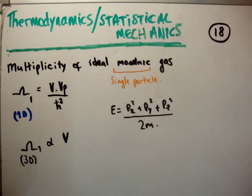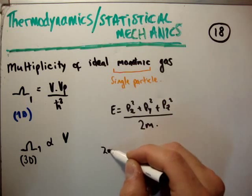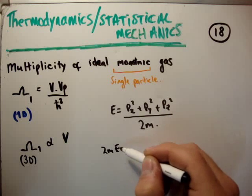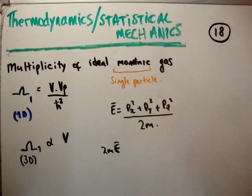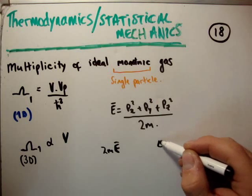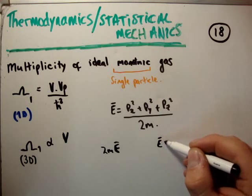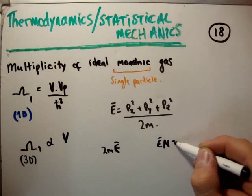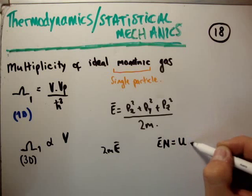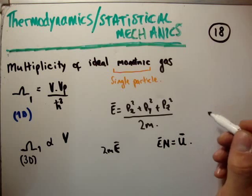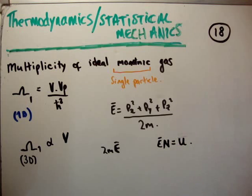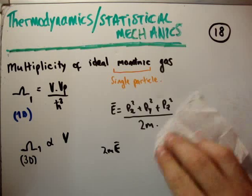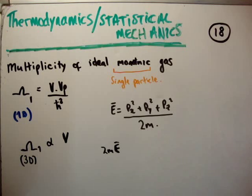Let's rearrange this. We're going to talk about the average energy of the particle, to be specific. We know that the average energy of the particle multiplied by the number of particles is equal to the total energy U. Because the fluctuations are so small, we say that it's actually the total energy. So let's just deal with the average energy of a single molecule at the moment.